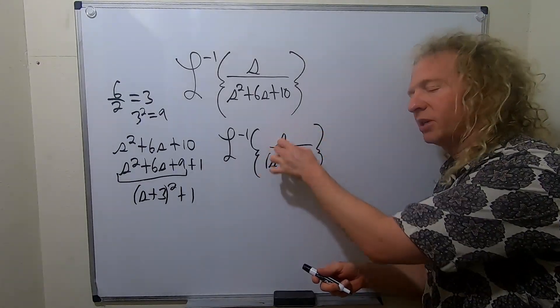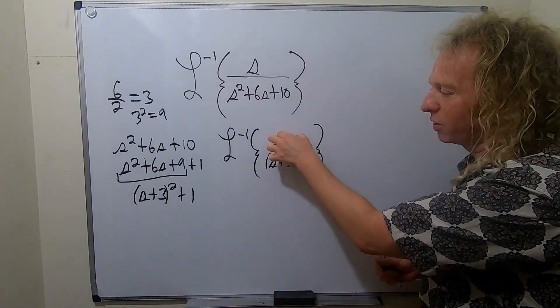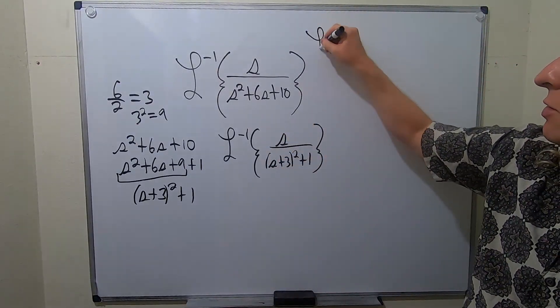Because if these are both s plus 3s, then you can use a shift to bring it back to s. So we want to make this an s plus 3 because we want these to match. Because there's a formula we want to use.